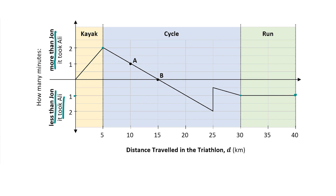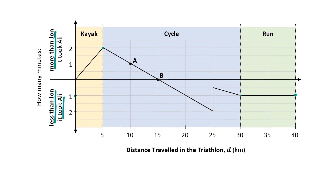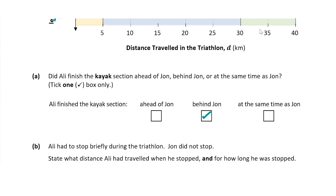Question A asks us: did Ali finish the kayak section ahead of John, behind John, or at the same time as John? After the first five kilometers — the kayak section — it took Ali two minutes more than John. So if it took him two minutes more, he was two minutes behind John. The answer is behind John.